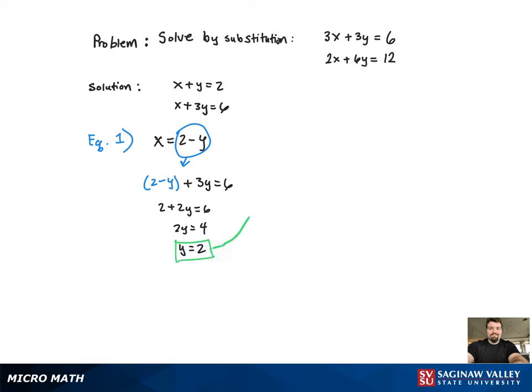Now I plug that back in for x. I get x equal to 0, and that's my ordered pair solution, 0 comma 2. And the graph will be provided.